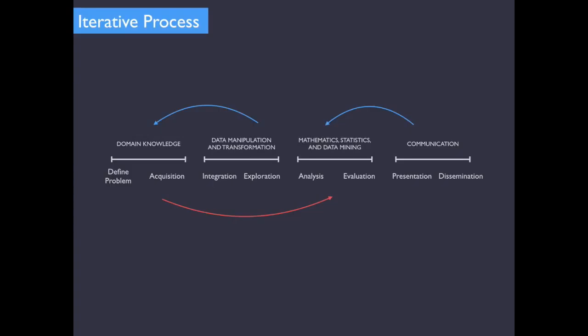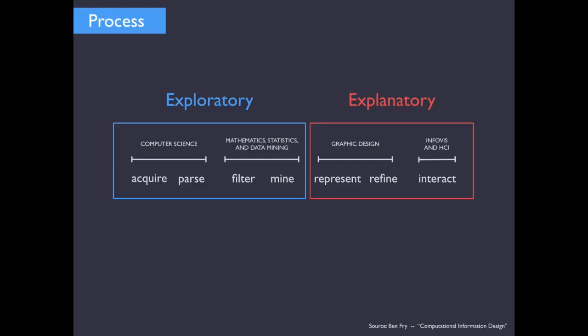But if the New York Times was just communicating internally between its engineers some results of a prediction they made on who's going to win the primary, they may not need to package it up in the same way or lay it out visually in the same way even. So presentation and dissemination are subtly, slightly different.